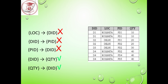p_id → d_id is also not possible because for the same p_id value in the first and third rows, we have two different d_id values — d1 and d2. Now, d_id functionally determining quantity is satisfied because for the same d_id value we have the same quantity value. Similarly, quantity functionally determining d_id is also satisfied.